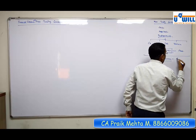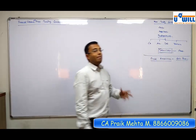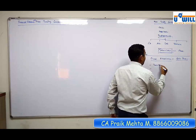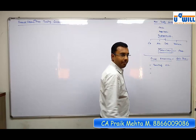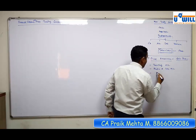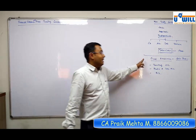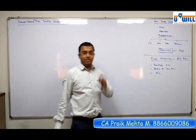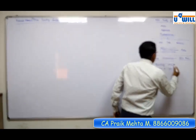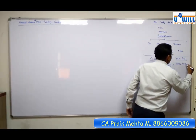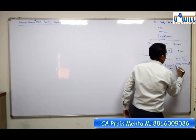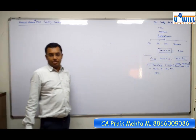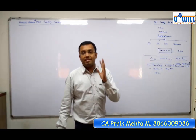आपने recently final accounts chapter पढ़ा होगा। Obviously वो chapter sole proprietor के लिए था — I hope you know what we mean by sole proprietor — जिसके अंदर सिर्फ एक ही owner होता है। उस final accounts chapter के अंदर आप trading account, profit and loss account, and balance sheet prepare करते थे। यह था financial statement of sole proprietorship। अब हमें पढ़ना है financial statement of non-trading concerns।